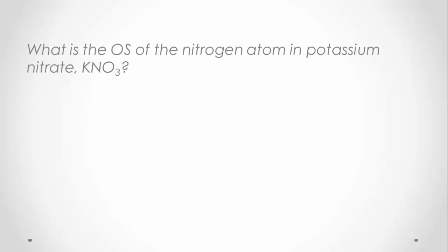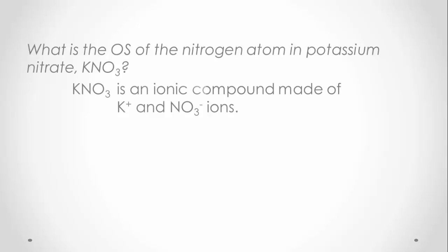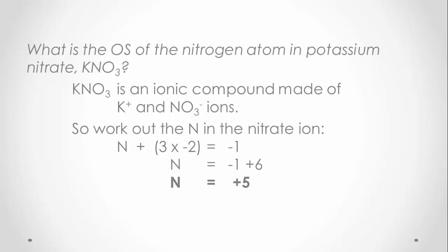Here is an example that often trips people up. The trick is that the oxidation state of both potassium and nitrogen are unknown. The solution is to recognise that potassium nitrate is an ionic compound made up of potassium ions and nitrate ions, so we only have to work out the nitrogen atom for the nitrate ion, which turns out to be positive five. The potassium ion will have an oxidation state of positive one.